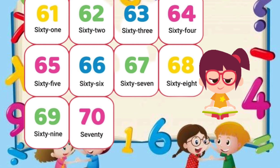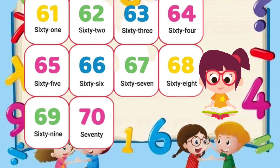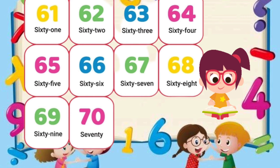61 — S-I-X-T-Y O-N-E. 61. 62 — S-I-X-T-Y T-W-O. 62. 63 — S-I-X-T-Y T-H-R-E-E. 63. 64 — S-I-X-T-Y F-O-U-R. 64. 65 — S-I-X-T-Y F-I-V-E. 65.